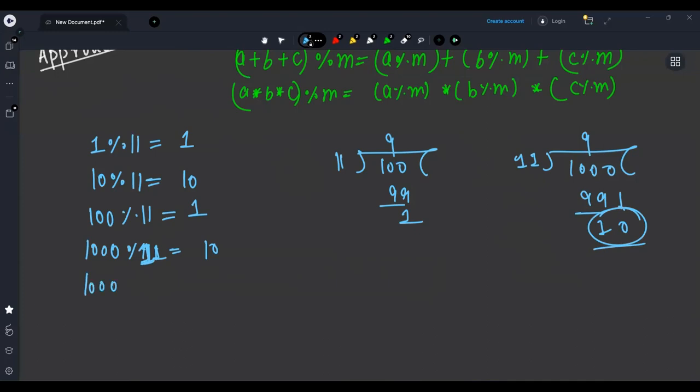So if you observe, if I go next it will give 1, 10, 1, 10. So this is a pattern that is forming: 1, 10, 1, 10, 1, 10 like this. This is a pattern that you have to observe.